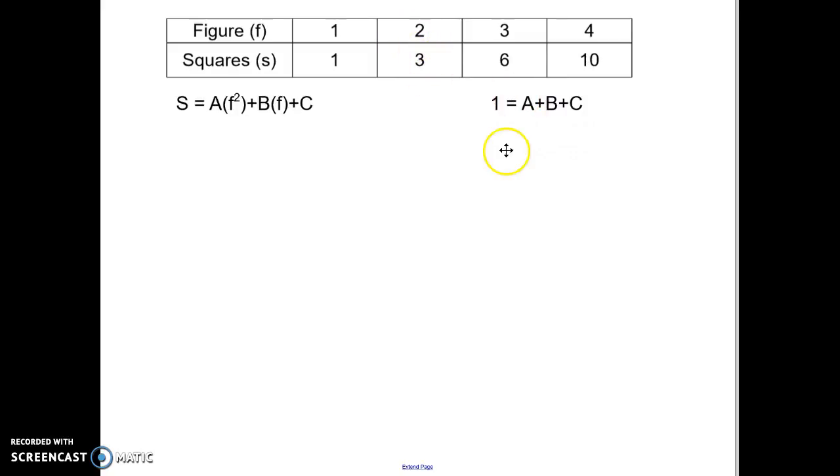If I go to figure 2, I know that 3 squares will equal 2 squared, that's 4a plus 2b plus c. Then if I go to figure 3, I know that 6 squares will equal 3 squared which is 9, so I've got 9a plus 3b plus c.